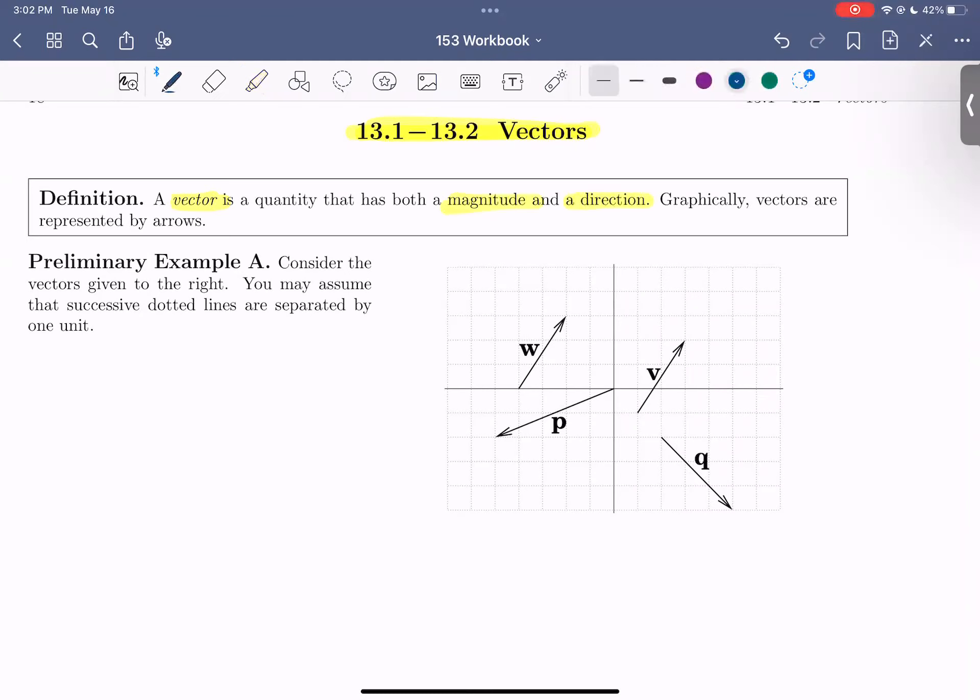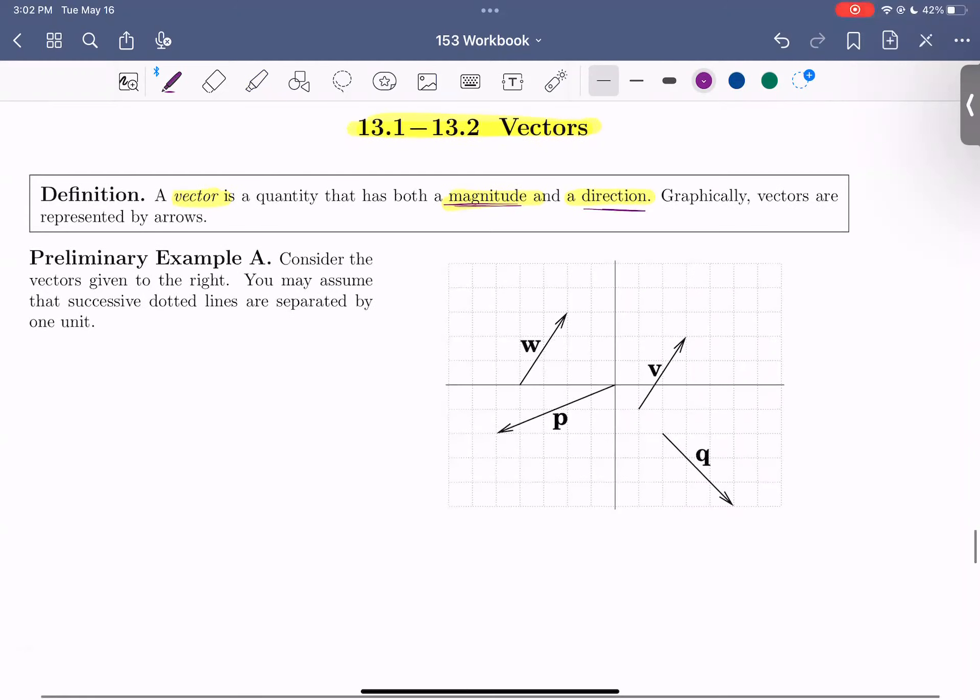So we should think of a vector as containing a magnitude, meaning like a size and a direction. So depending on what space we're in, 2D, 3D, that will determine how many parameters we need to define that direction. We'll see some examples here soon.